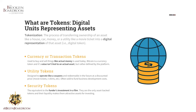Say, for example, you want to share ownership of your house with a friend or family member in a cryptocurrency structure. You go through the process called tokenization and transfer the ownership of that asset — the house — into a digital representation, so that 50% is owned by you and 50% by the other party.